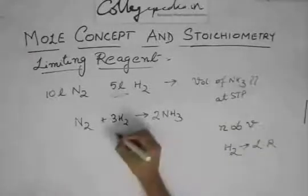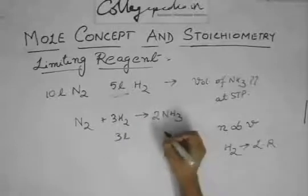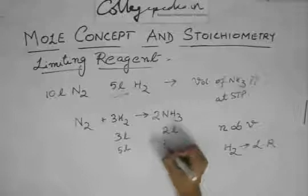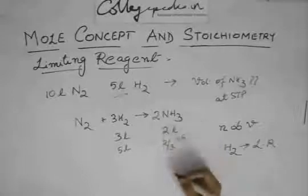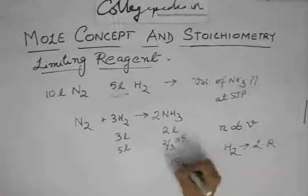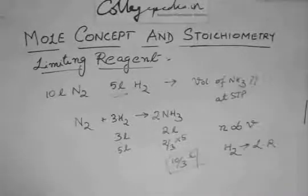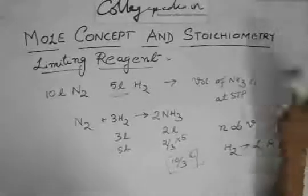Now proceed with hydrogen. Here, 3 liters will give you 2 liters. So 5 liters will give you 2 by 3 into 5, which is 10 by 3 liters. Simple as that. 10 by 3 liters at STP.